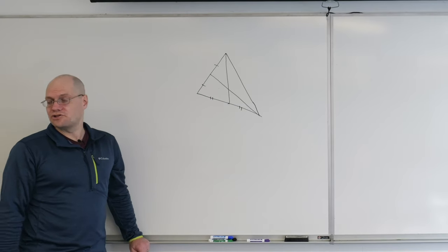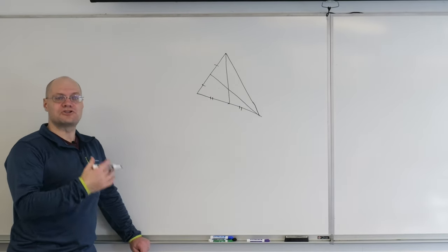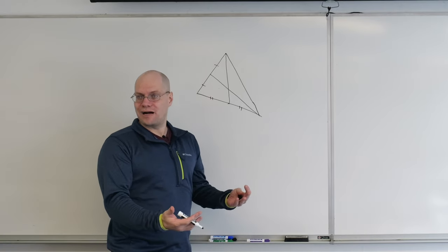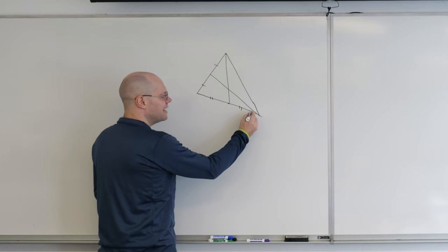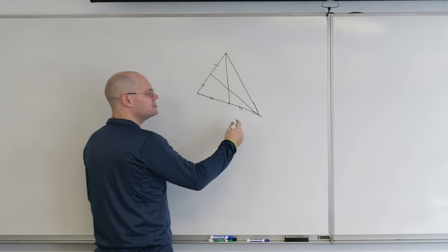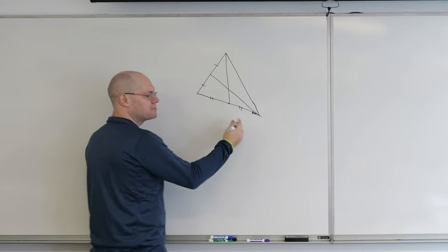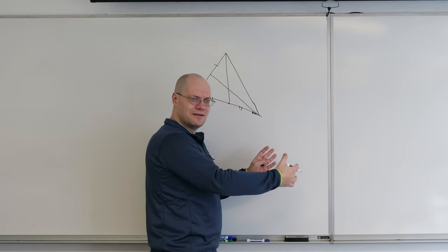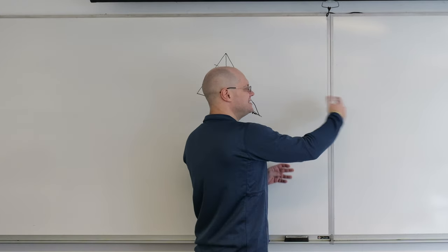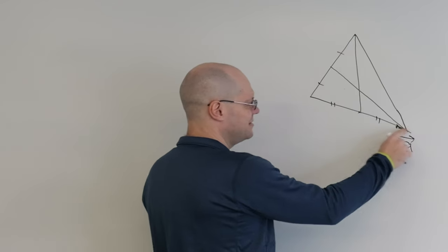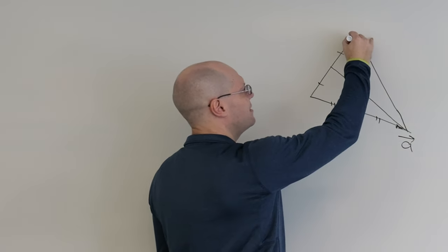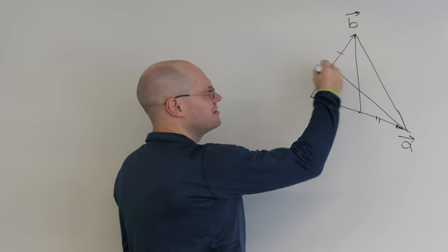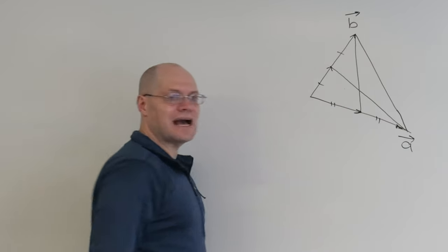We don't need any additional construction. We just need to start translating into vector algebra the statement of the problem and then calculating. So I need to now impose a vector framework upon this geometric problem. It starts with geometry and it needs to end with geometry, and in the middle we'll take a detour into algebra. I will call this vector A and this vector B. And then this one right here is half B. This vector is half A.